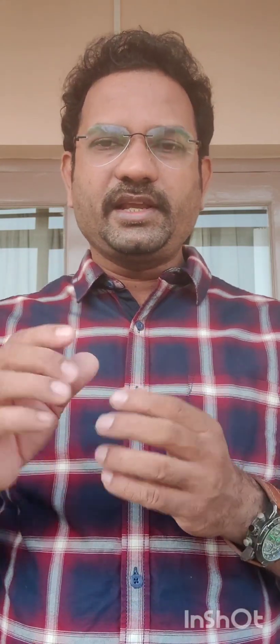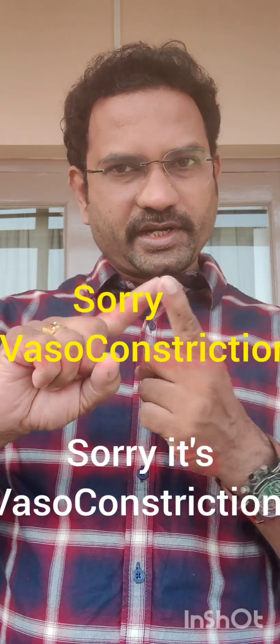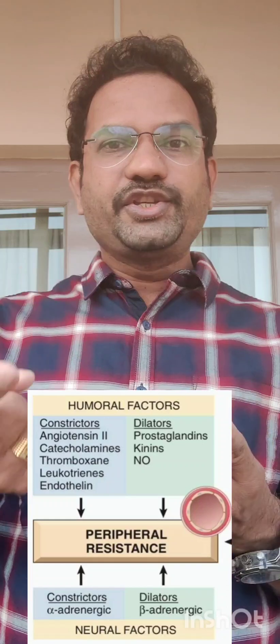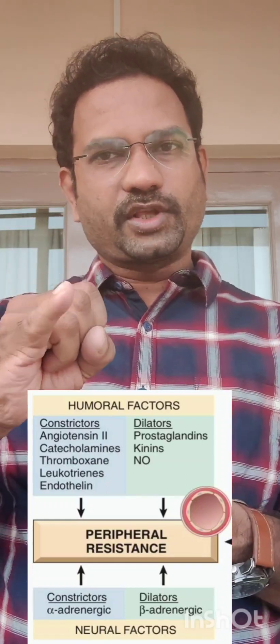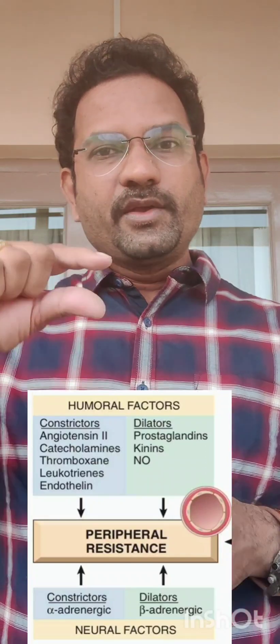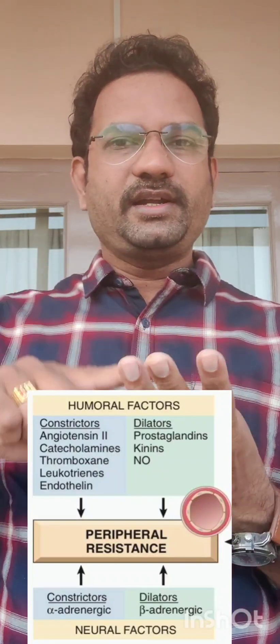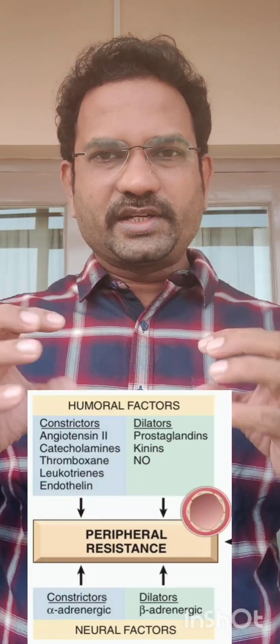Peripheral vascular resistance is determined by chemicals that cause either vasodilation or vasoconstriction. Vasoconstriction — which increases blood pressure — is caused by the adrenergic system, catecholamines, endothelin, angiotensin II, leukotrienes, and thromboxanes. Vasodilation — which decreases blood pressure — is caused by prostacyclins, nitric oxide, and kinins.